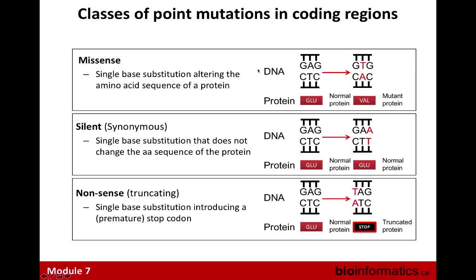There are three main classes of mutations in coding regions. Missense mutations are single base substitutions that alter the amino acid of a protein, often occurring in the first or second position of a codon. Silent or synonymous mutations often occur in the third position of a codon where there's redundancy — there are 64 codons and about 20 amino acids, so many codons encode the same amino acid. Nonsense or truncating mutations introduce a premature stop codon, essentially truncating the protein and affecting its function.